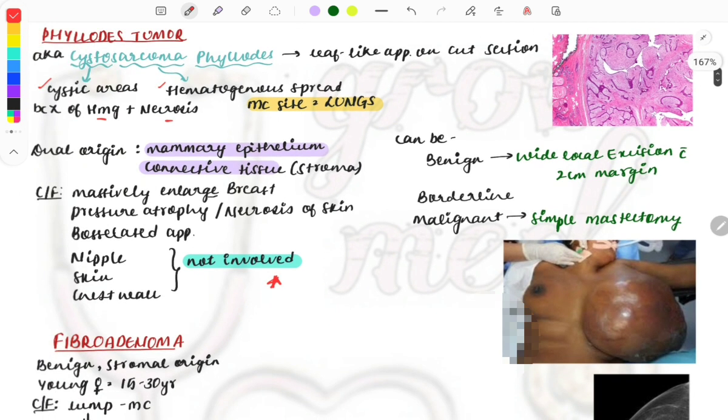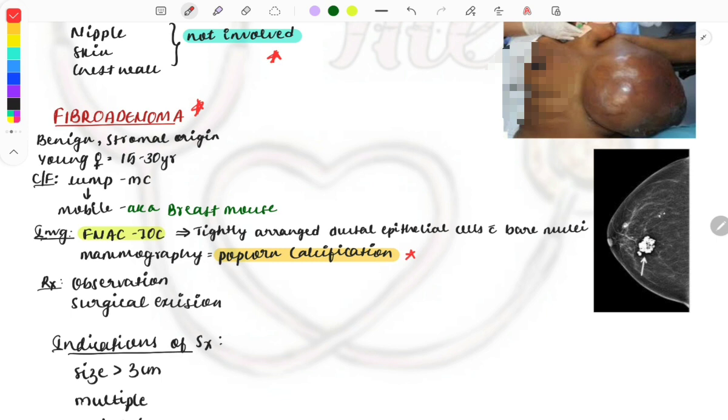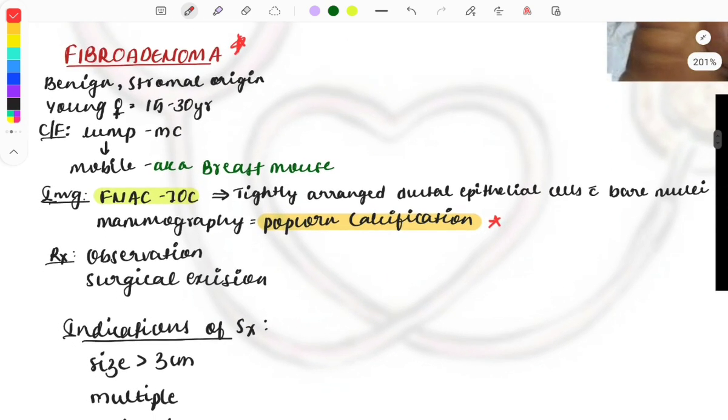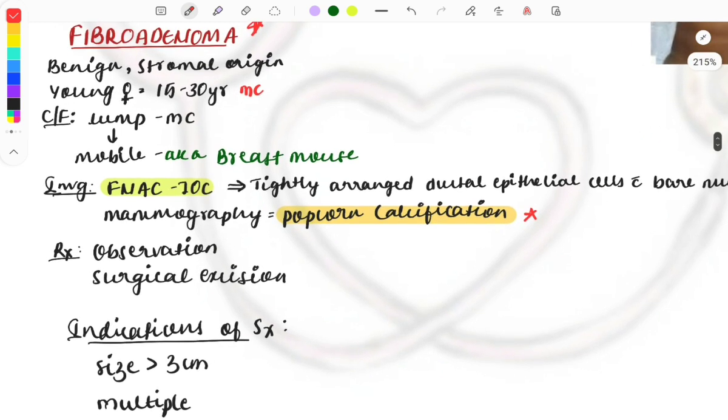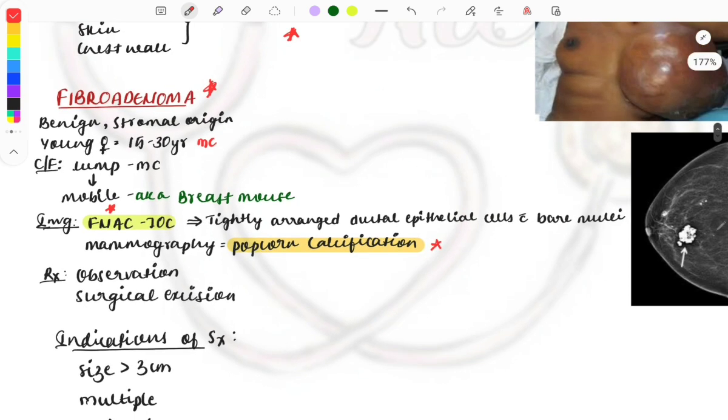Moving on to fibroadenoma—this is benign and of stromal origin. Almost everyone knows about this and has solved many previous year questions. It's most commonly seen in young females aged 15 to 30 years. Clinical feature is a breast lump that's mobile, called a breast mouse. Investigation of choice is FNAC, showing tightly arranged ductal epithelial cells with bare nuclei.